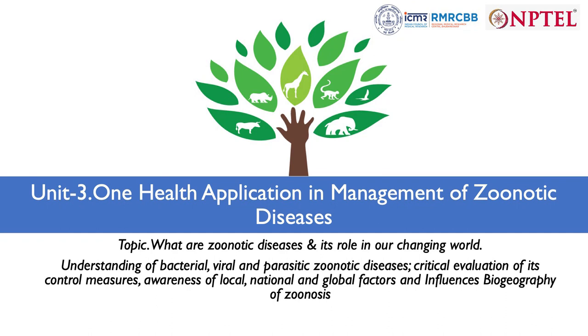Zoonoses are communicable diseases which spill over from animals to humans, and that is a public health concern. But human health cannot be separated from animal health, environmental health, or plant health. We will talk about One Health application in the management of zoonotic diseases. One Health can be a big umbrella — food security, food safety, pesticide use, antimicrobial resistance, climate change all come under it — but today we focus on zoonotic diseases.